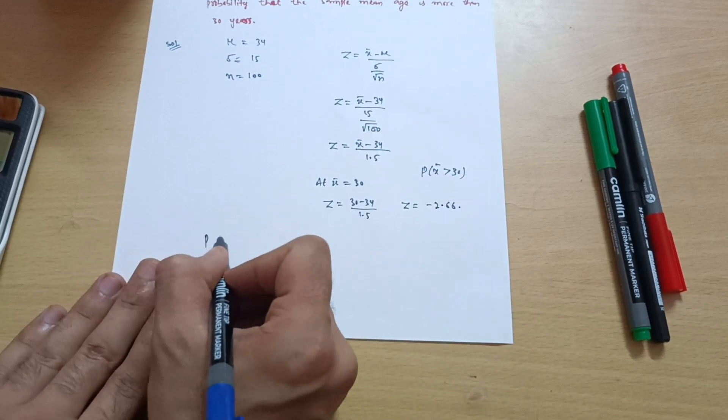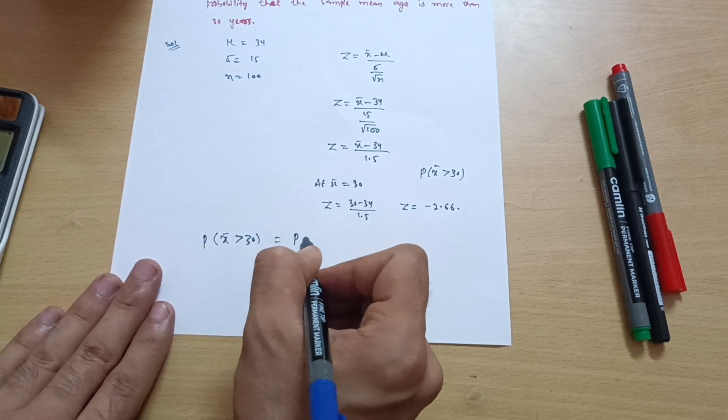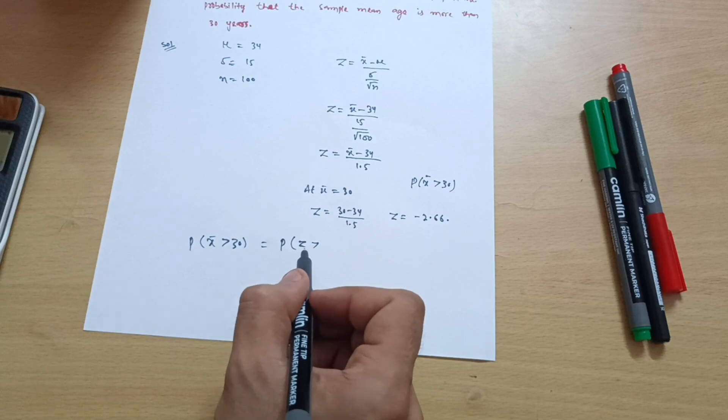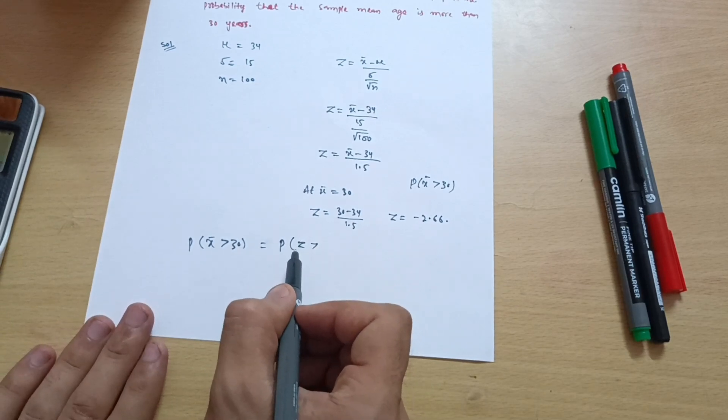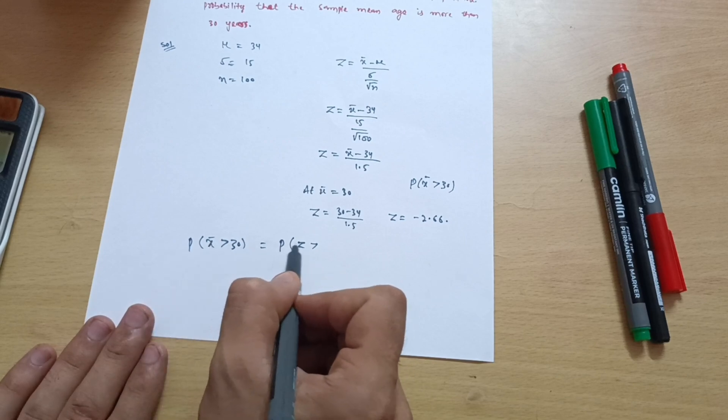Now I have to calculate the probability of x̄ greater than 30, which I can write as P of z greater than... I am taking z just because I have to check the value in the normal distribution table where z plays an important role.